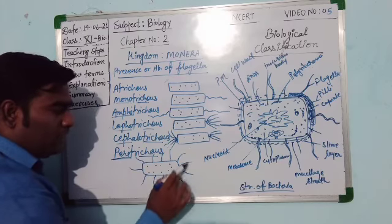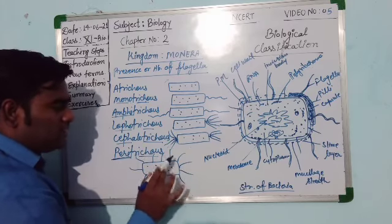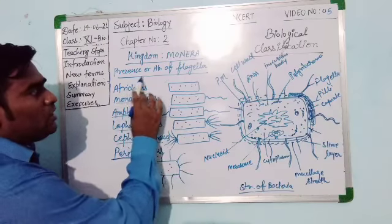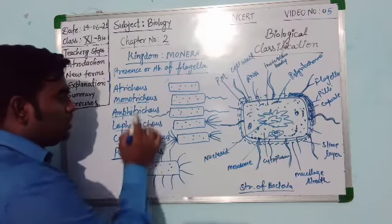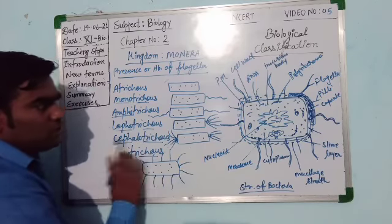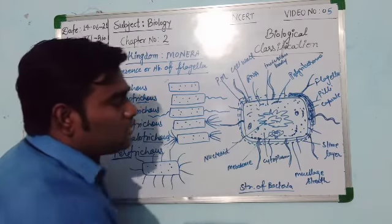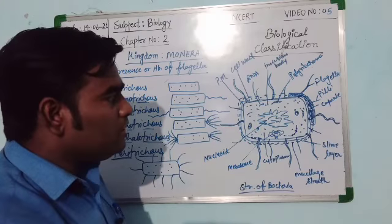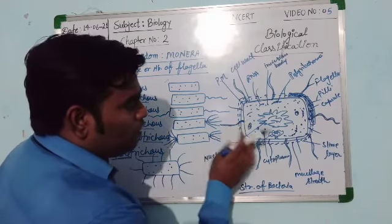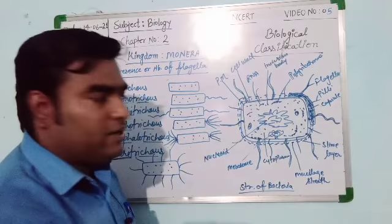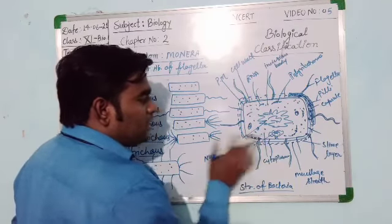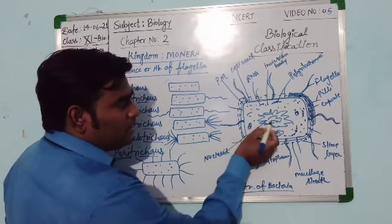So these are the terms used for bacteria on the basis of presence or absence of flagella. Now let us see the bacterial cell structure. This is a unique cellular prokaryotic type of bacteria having a very primitive cell structure with a nucleoid.